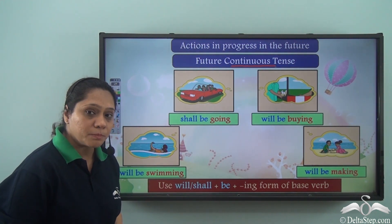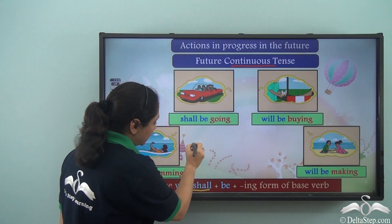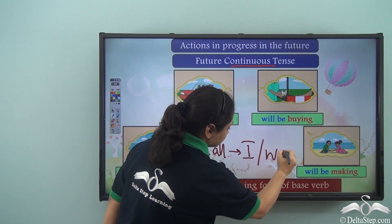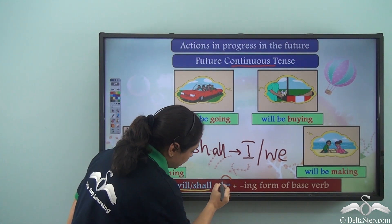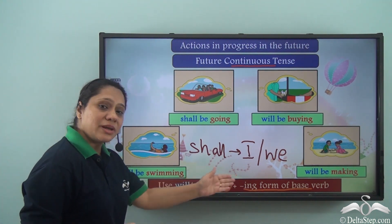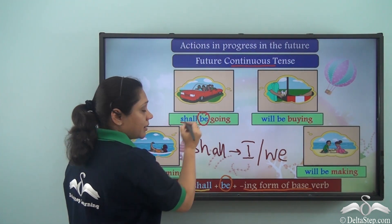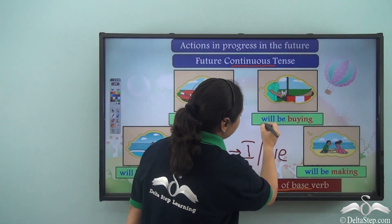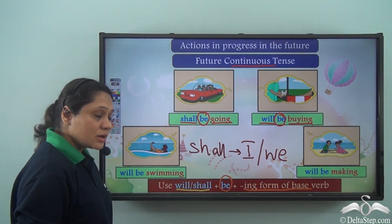If you notice, all these verbs have a particular form. The form is: will or shall — and we use shall with 'I' or 'we' — then will or shall with 'be', and then the -ing form of the base verb. For example, shall be going and will be buying.